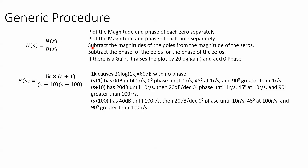So the generic procedure is: plot the magnitude and phase of each zero separately, plot the magnitude and phase of each pole separately — but treating poles as if plotting zeros, so everything has a positive slope. Then subtract the phase of the poles from the phase of the zeros, and subtract the magnitudes of the poles from the magnitudes of the zeros. If there's a gain, it acts like a constant signal that raises or lowers the magnitude, and adds zero phase.